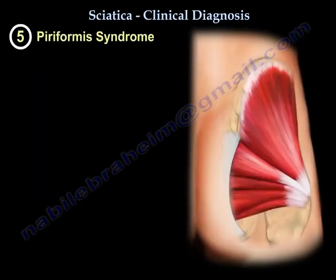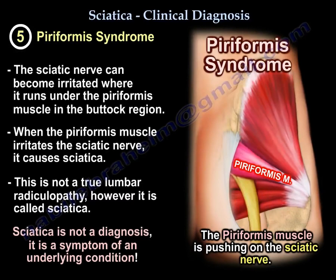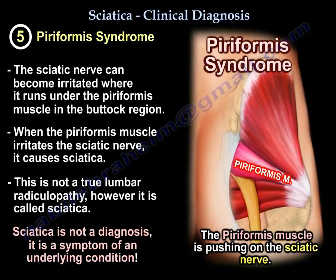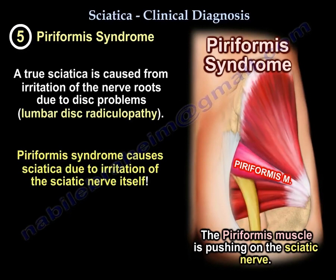Number five is piriformis syndrome. The sciatic nerve can be irritated as it runs under the piriformis muscle in the buttock. If this muscle irritates the nerve, it causes sciatica. However, this is not a true lumbar radiculopathy. Sciatica is not a disease and not a diagnosis — it is a symptom of an underlying condition. True sciatica from irritation of the nerve roots by disc problems is called lumbar radiculopathy, whereas piriformis syndrome causes sciatica due to irritation of the sciatic nerve itself.